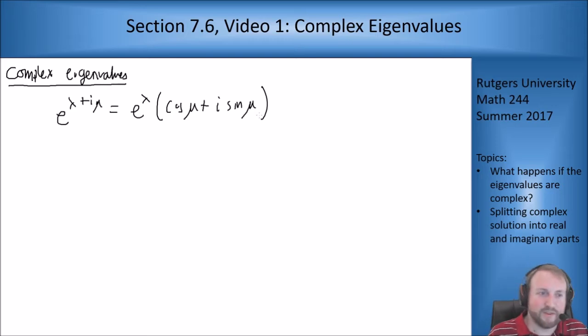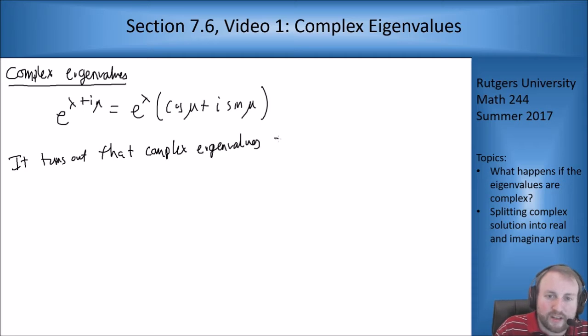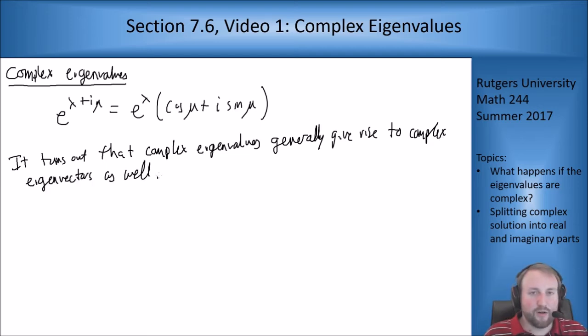However something a little tricky happens and that's because to do these problems we need both eigenvalues and eigenvectors. So it turns out that complex eigenvalues generally give rise to complex eigenvectors as well. The only thing that really makes it difficult is that the splitting into real and imaginary parts isn't quite as simple as it was in the normal function case.